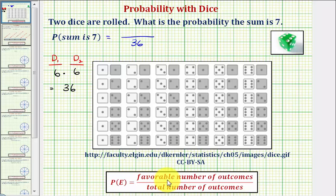Now we'll determine the favorable number of outcomes, which would be the rolls that have a sum of seven. Looking at all of our outcomes, we have a one and a six, which has a sum of seven. We also have a six and a one, which has a sum of seven.